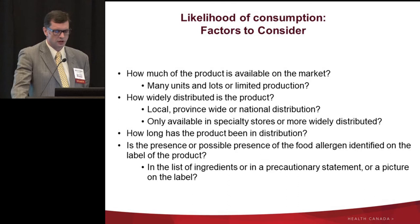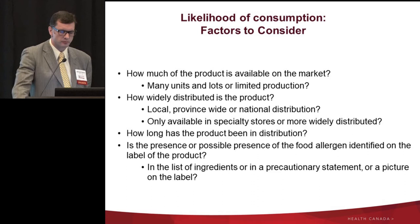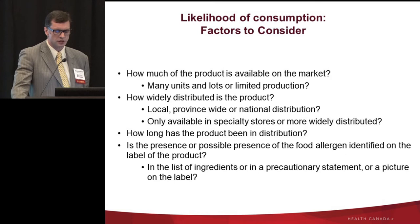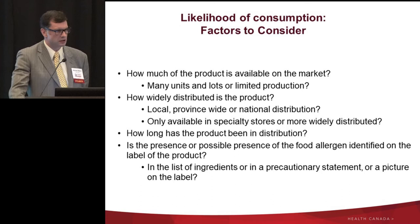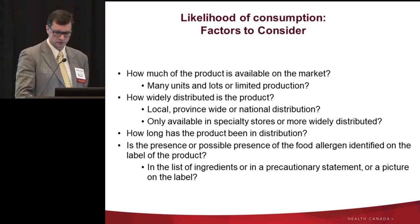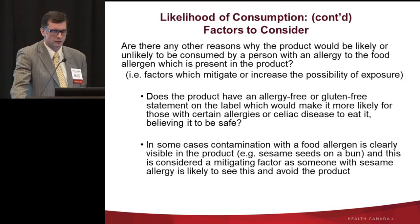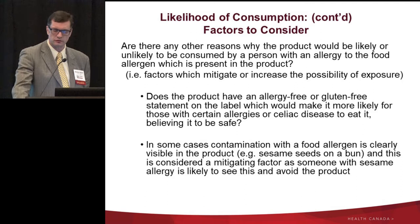We try to get as much information about distribution as we can, and we look at how long the product has been in distribution. We also look at whether the presence or possible presence of the allergen is identified on the label — whether it's in the ingredient list, in a precautionary 'may contain' statement, or suggested by a picture on the label — basically any information about why the product would be likely or unlikely to be consumed by a person with a particular food allergy.